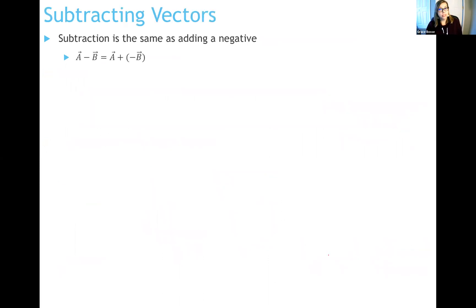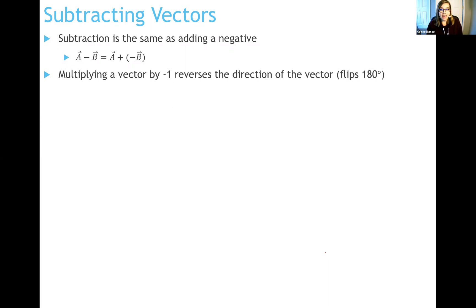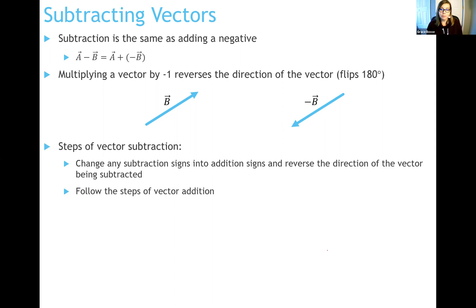Closely related to addition is subtraction. Vector subtraction is really the same thing as addition if you think of subtraction as adding a negative. So A minus B is the same as A plus negative B. All you have to do is find negative B. From multiplying by a scalar, you know that negative B points in exactly the opposite direction — 180 degrees away from vector B. Change subtraction into addition, then follow the steps of vector addition.